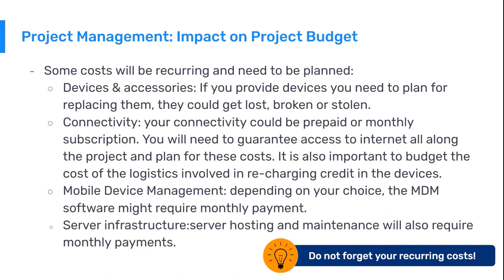Apart from the costs mentioned above, there are some recurring costs that also need to be considered. As mobile devices are more exposed to risk, they are more likely to fail, break, or get lost. Including specific budget lines for spare parts, new devices, and accessories should be considered. In implementations with no Wi-Fi and therefore using data connectivity, additional costs might come from data bundles, their management, and distribution. MDMs are usually sold under monthly or yearly subscriptions. Server hosting and maintenance is also a recurring cost that should not be neglected, and in projects likely to grow over time, server specifications might need to be upgraded accordingly.